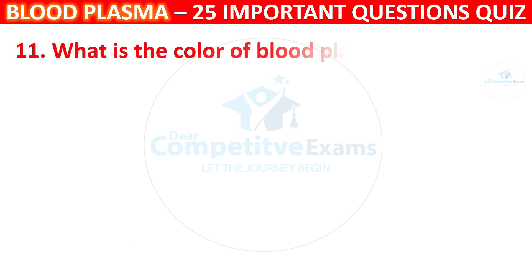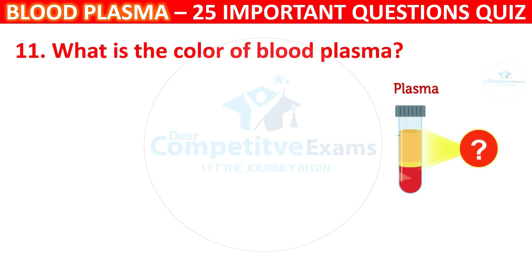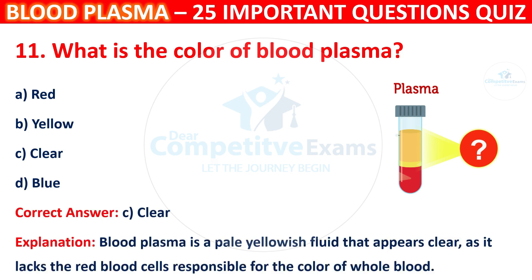Question 11: What is the color of Blood Plasma? Your options are Red, Yellow, Clear, or Blue. The correct answer is Clear. Blood Plasma is a pale yellowish fluid that appears very clear, as it lacks the red blood cells responsible for the color of whole blood.